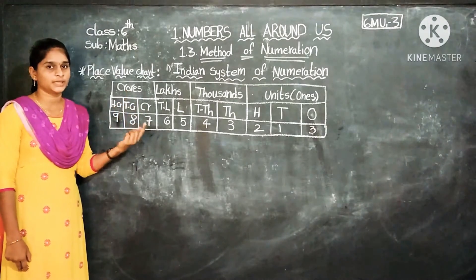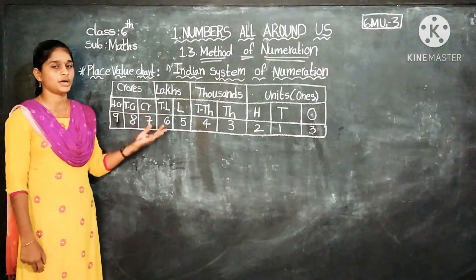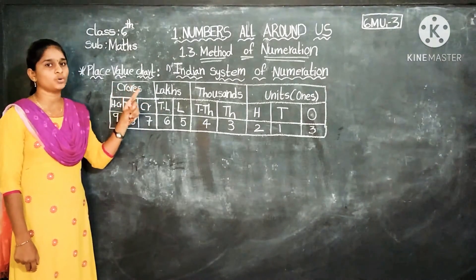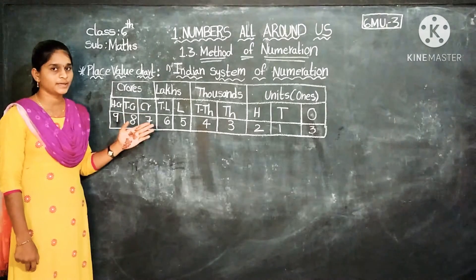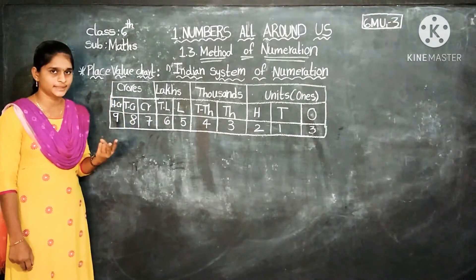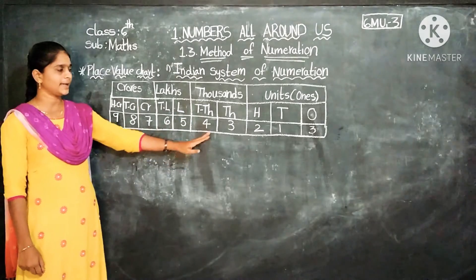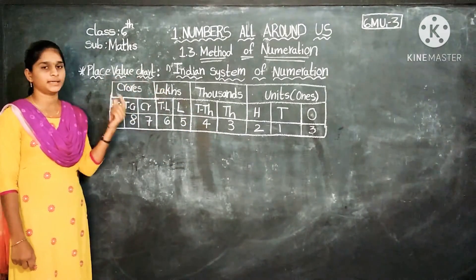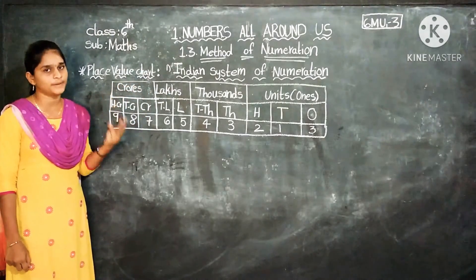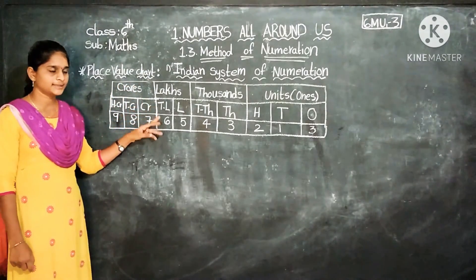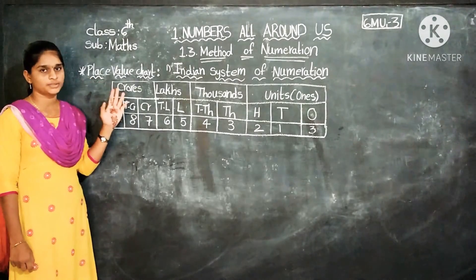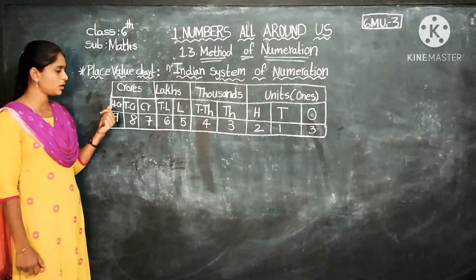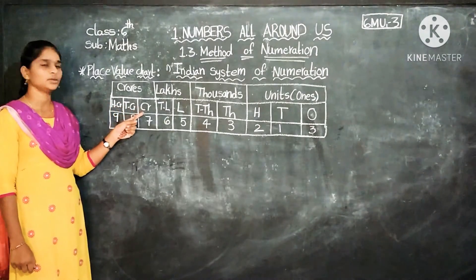The Units period has 3 places: Ones, Tens, Hundreds. The Thousands period has 2 places: Ten Thousands and Thousands. The Lakhs period has 2 places: Ten Lakhs and Lakhs. The Crores period has 3 places: Hundred Crores, Ten Crores, and Crores.